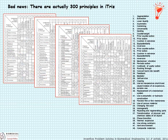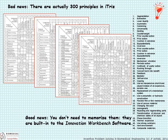The bad news is that there are actually 300 principles, not just 40. But the good news is you don't need to memorize all 300 — they're embedded into the Innovation Workbench software that the Ideation people are making available to you for free, at least for the duration of the semester. So at your earliest convenience, please download that software and begin installing it on your computer.